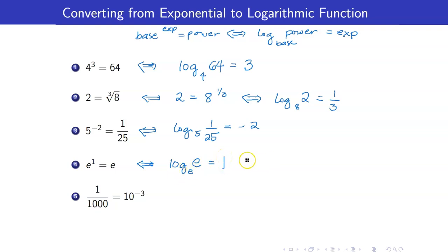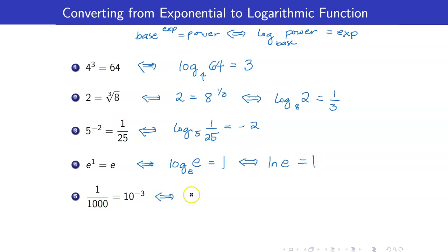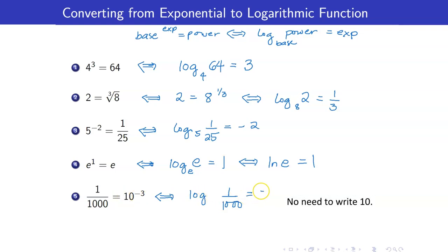However, if the base is e, we write that as ln of e, which equals 1. And lastly, we have logarithm — the power is 1 over 1000, to the base 10, is equal to negative 3.